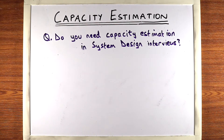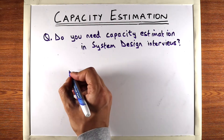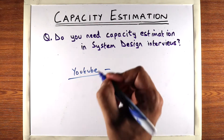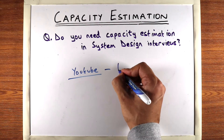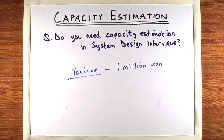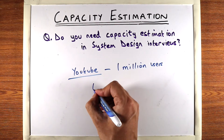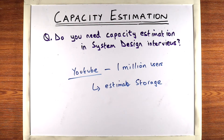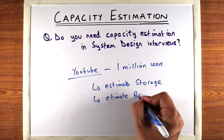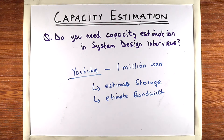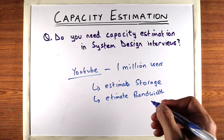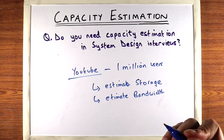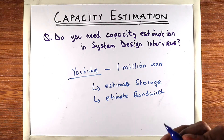Let me give you an example of capacity estimation. Let's say you're asked to design YouTube, and you come up with a scenario where you have 1 million users. With capacity estimation, you'd try to estimate how much storage these videos are going to need, or estimate the bandwidth for these users. When actually designing a system, this might be very useful for capacity planning, but I'll show you why in an interview it really doesn't matter.